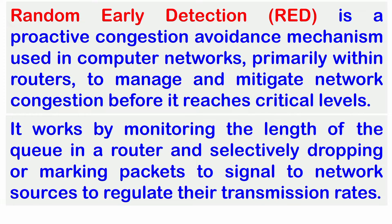Random Early Detection is like a traffic cop for internet data. It keeps an eye on how busy your router is, and if it starts to get too crowded, RED tells some data packets to slow down or take a break. This helps prevent congestion and keeps the internet running smoothly for everyone.